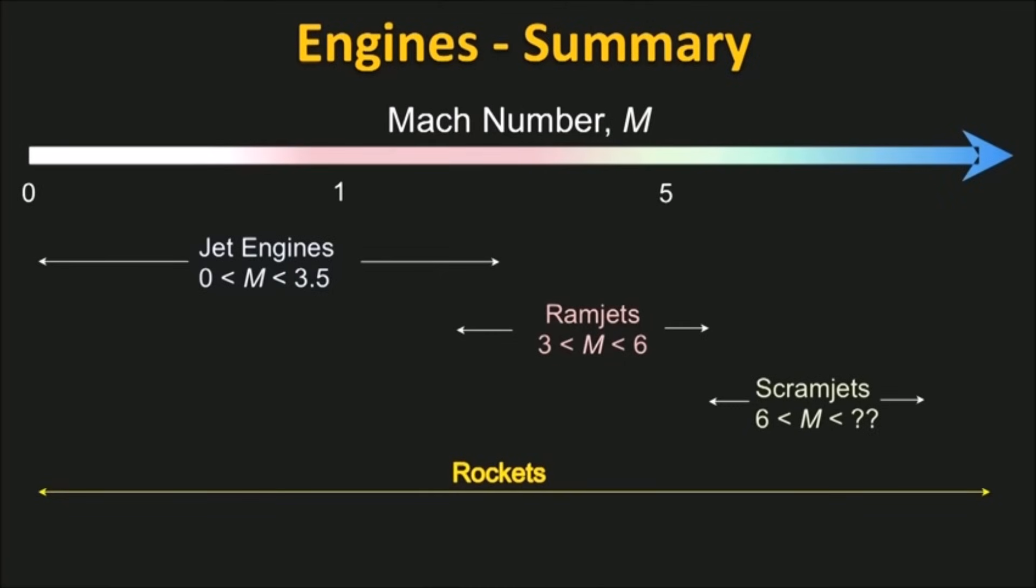Let's finish by summarizing the engines and their operating regimes. Jet engines can operate from zero speed up to around 3.5 times the speed of sound. Ramjets are good for around Mach 3 to Mach 6. And then scramjets are suitable for the higher hypersonic Mach numbers. We're still not sure how far we can push into the hypersonic regime with scramjets. Rockets are less efficient, but they can operate over all the Mach number regimes.